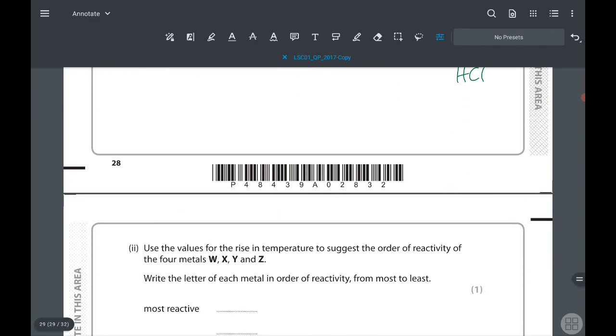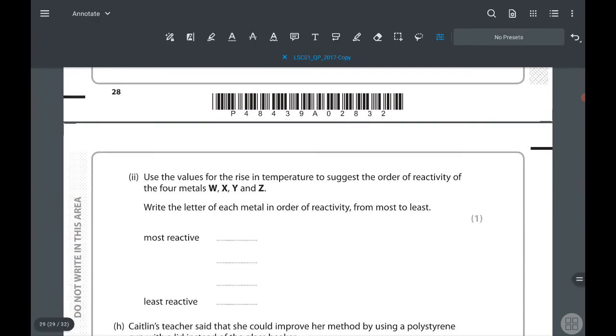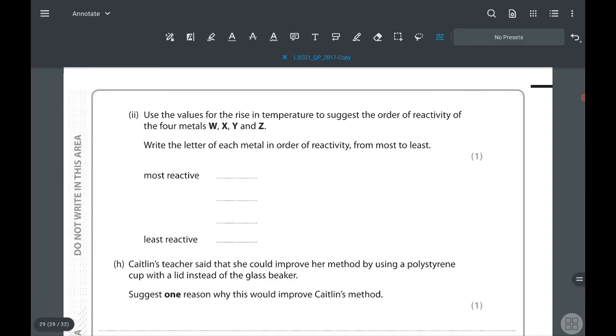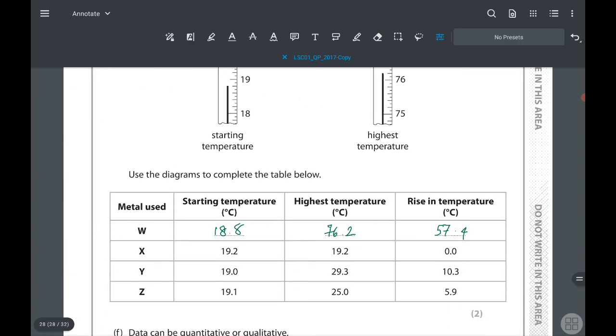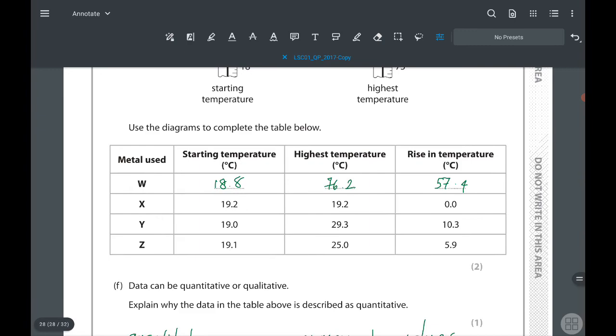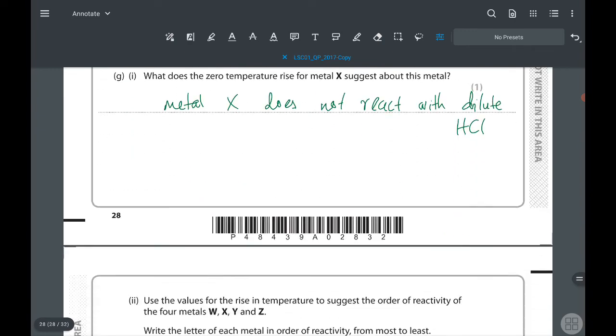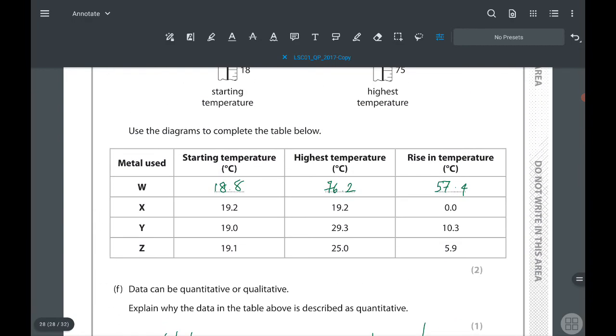Data can be qualitative or quantitative. Explain why data in the table above is described as quantitative. Because quantitative has numerical values. So to explain something, if we are using numerical values that means it is a quantitative explanation. What does the zero temperature rise of metal X suggest about the metal? We can say that it doesn't react with the dilute hydrochloric acid.